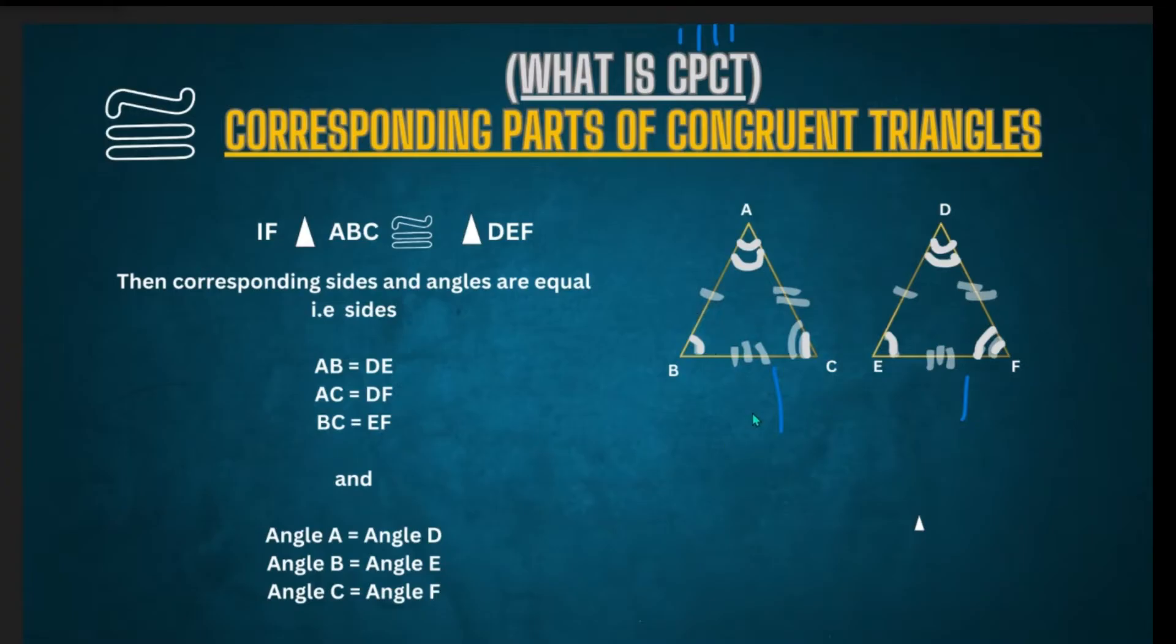That's what CPCT just means. So let us take. Here AB will be equal to DE, the corresponding. Similarly, AC will be equal to DF, the corresponding side. Now side BC will be equal to EF, the corresponding side. So this is what CPCT means.